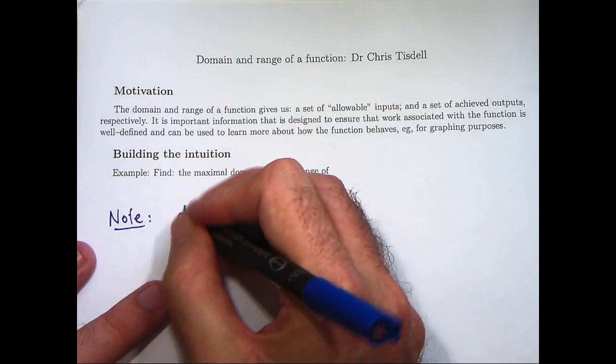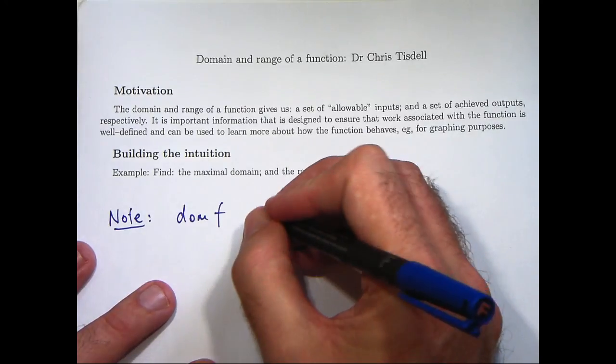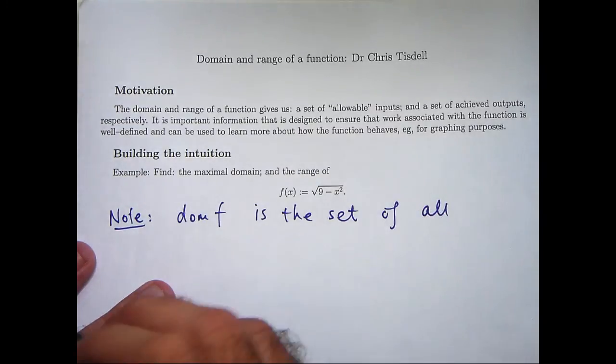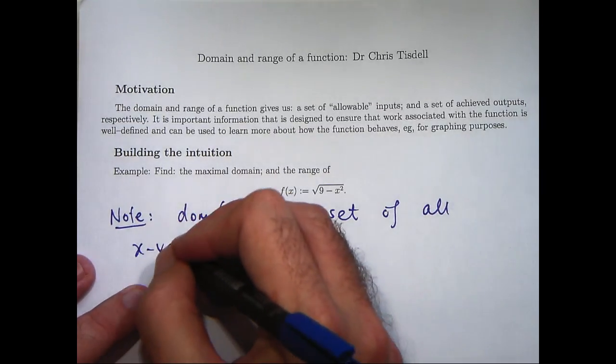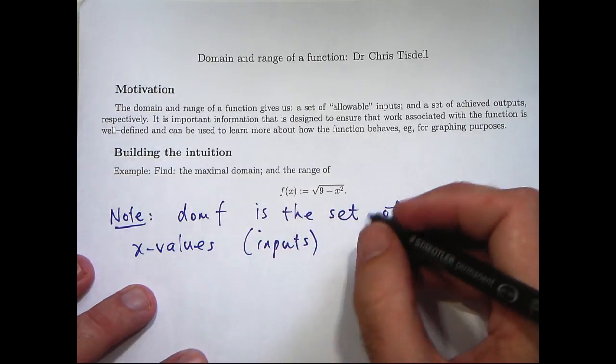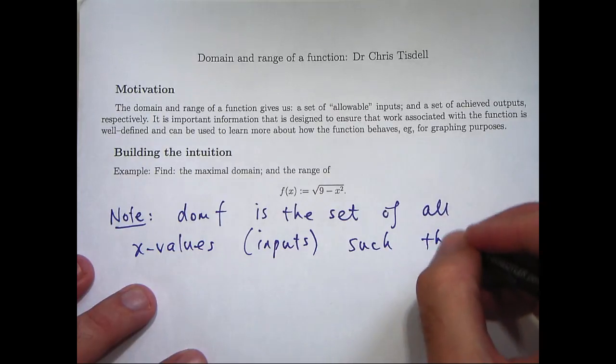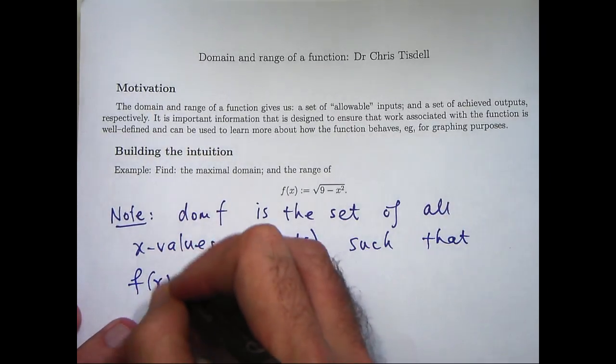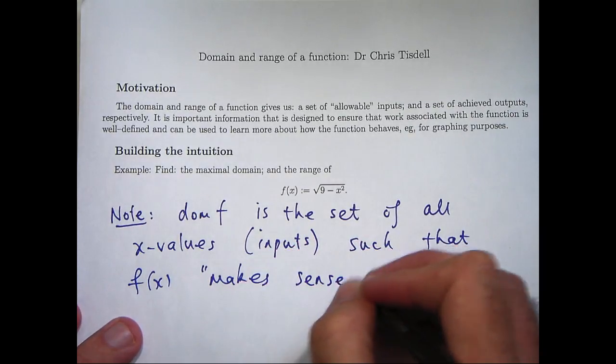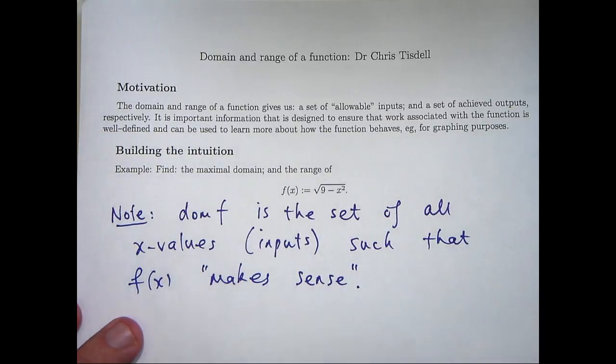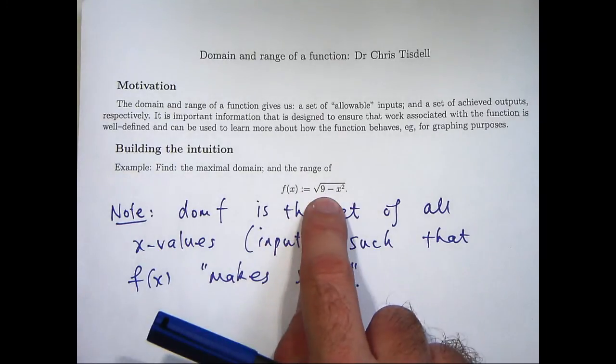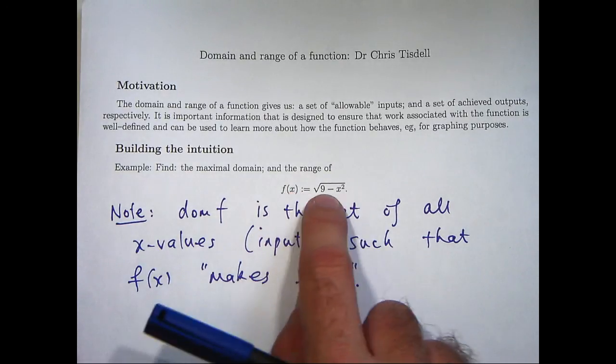So in a nutshell, the domain of a function is the set of all x values or inputs such that the output f(x) makes sense or has meaning. So we have to determine all those x values that can be inputted into here that make the function f(x) make sense.